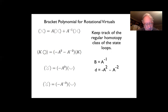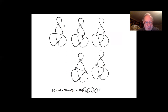Here is a specimen K with a couple of virtual crossings and a couple of classical crossings. I've indicated the four states of the bracket: smooth both crossings A-way, one A and one B, one B and one A, and both Bs. The bracket polynomial is A-squared times the homotopy class of that loop, AB times the homotopy class of that loop, BA times the homotopy class of that loop, and B-squared times the homotopy class of the remaining loop.